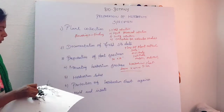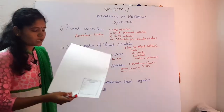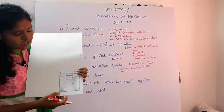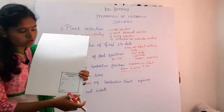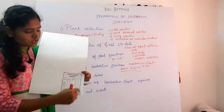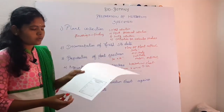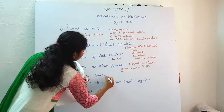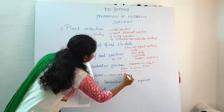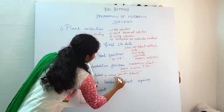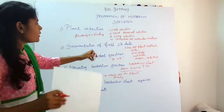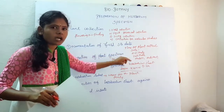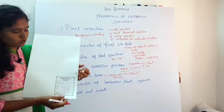Fifth step: herbarium labels. The herbarium label size is 4 to 5 inches wide and 2 to 3 inches tall. The label contains the name of the plant and the family. It also includes documentation of field site data from the field note — including date, altitude, latitude, habit, and habitat — as well as locality, state, and country.